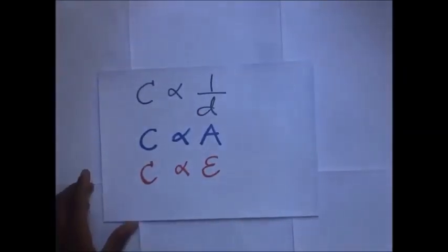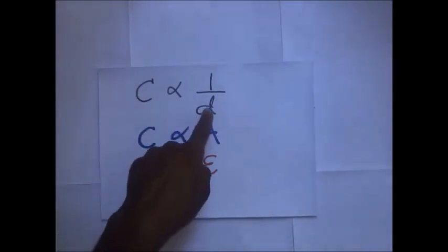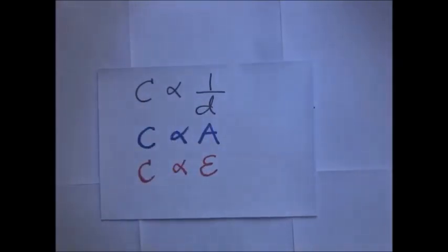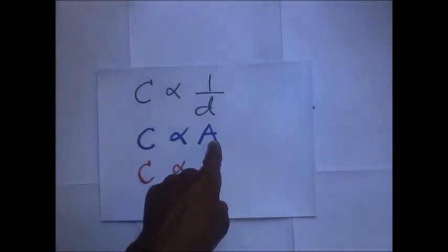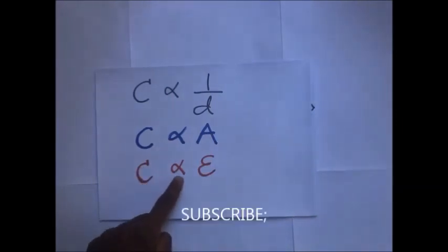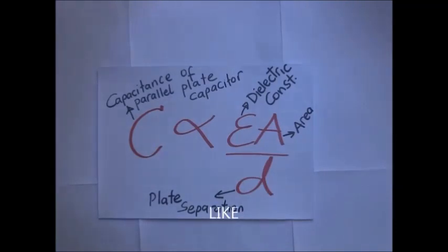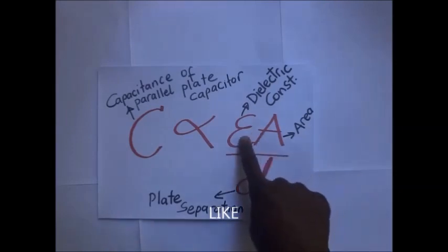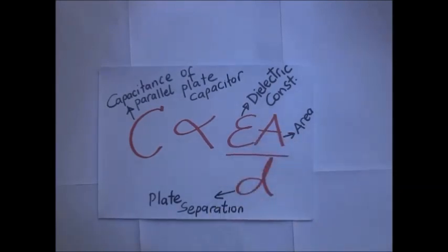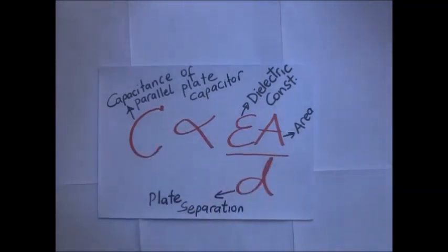The three factors give us the relationship: capacitance of a parallel plate capacitor is inversely proportional to the distance between the plates, directly proportional to the area of overlap, and directly proportional to the permittivity of the dielectric introduced between the plates. In our next video we shall look more into the capacitance of a parallel plate capacitor and how we arrive at this expression arithmetically.